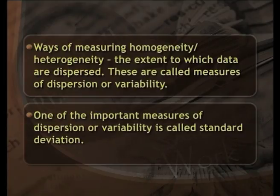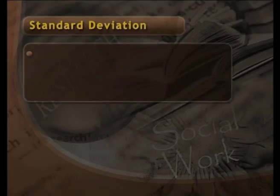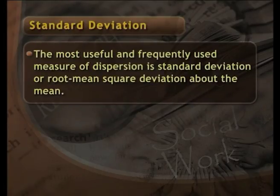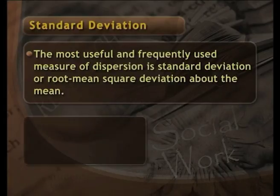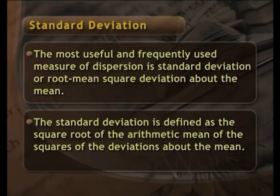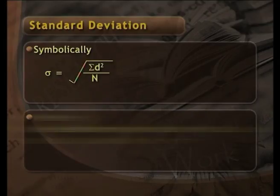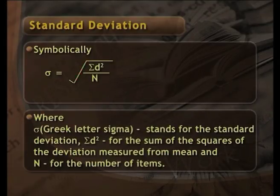One of the important measures of dispersion or variability is called standard deviation. The most useful and frequently used measure of dispersion is standard deviation, or root mean square deviation about the mean. It is defined as the square root of the arithmetic mean of the squares of the deviations about the mean. Symbolically, sigma (Greek letter) stands for standard deviation, d² for the sum of squares of the deviations measured from the mean, and n for number of items.